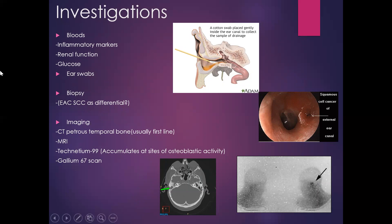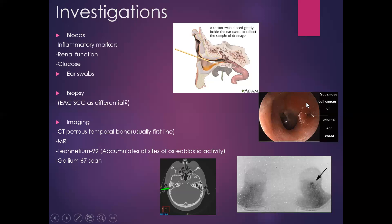Send off an ear swab — very important, it will tell us what microorganisms are growing and may differentiate between fungal or bacterial, guiding antibiotic therapy. The only way to differentiate between necrotizing otitis externa and squamous cell carcinoma is biopsy, so a biopsy should always be taken if there's any granulation tissue or mass visible. This picture shows an SCC of the external ear canal, which can present similarly with apparent bony erosion.